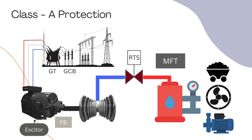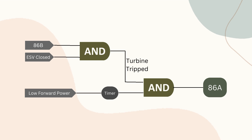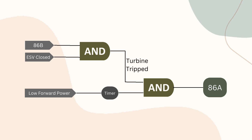When the turbine is tripped, the rotor speed of the generator starts decreasing and cannot send sufficient power, but reverse power flow may happen. Class A protection will operate through low forward power protection. The logic works as follows: the 86B operated and RTS valve closed signals ensure the turbine is tripped. When the low forward power relay operates after a time delay, these two signals send a command to the 86A relay to trip.